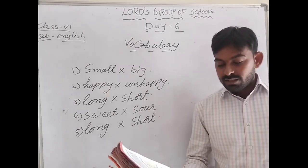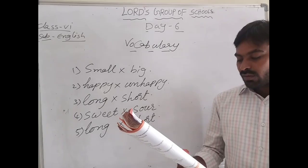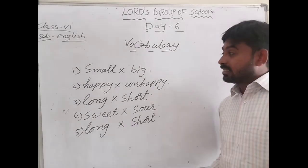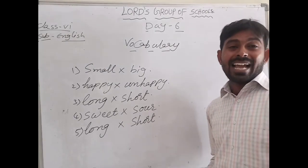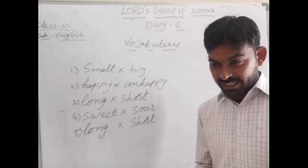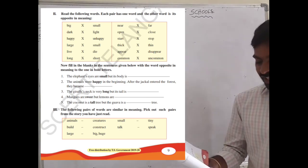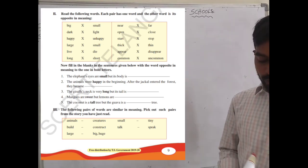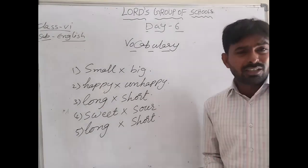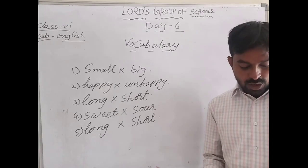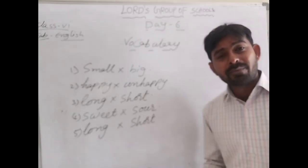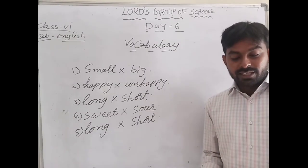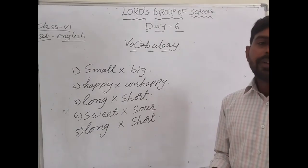Now the third part — the following pairs of words are similar in meaning. Pick out such words from the story you have just read. This means we are talking about synonyms, which give the same meaning. For example: animals–creatures, small–tiny, build–construct, tall–large, big–huge. Also, 'peace' means calm or silence, and 'unanimously' means all united together.